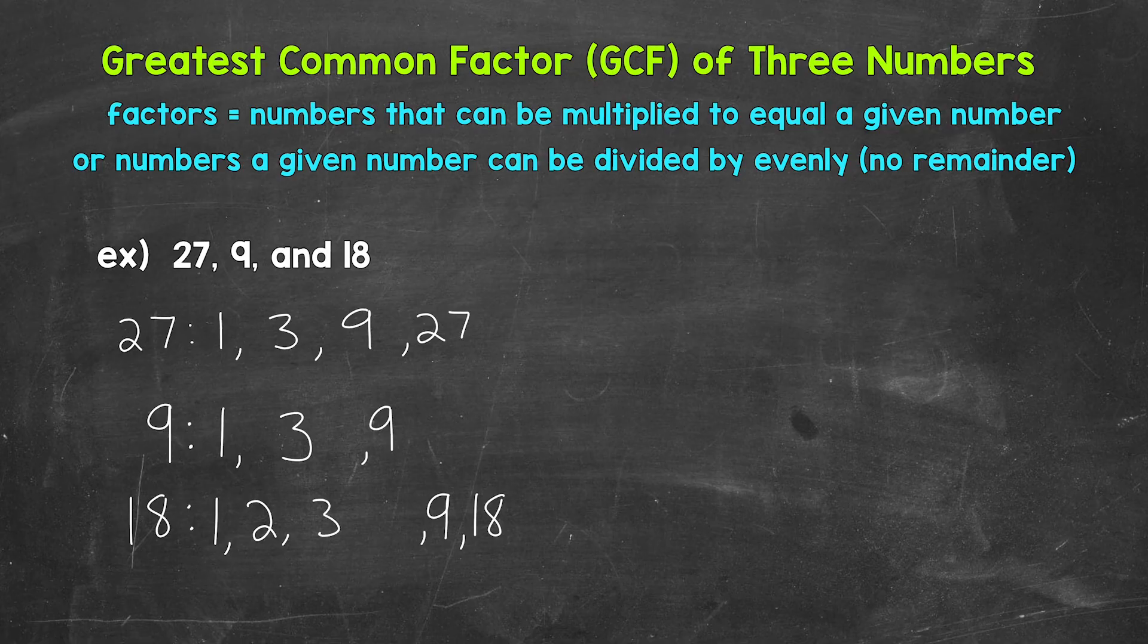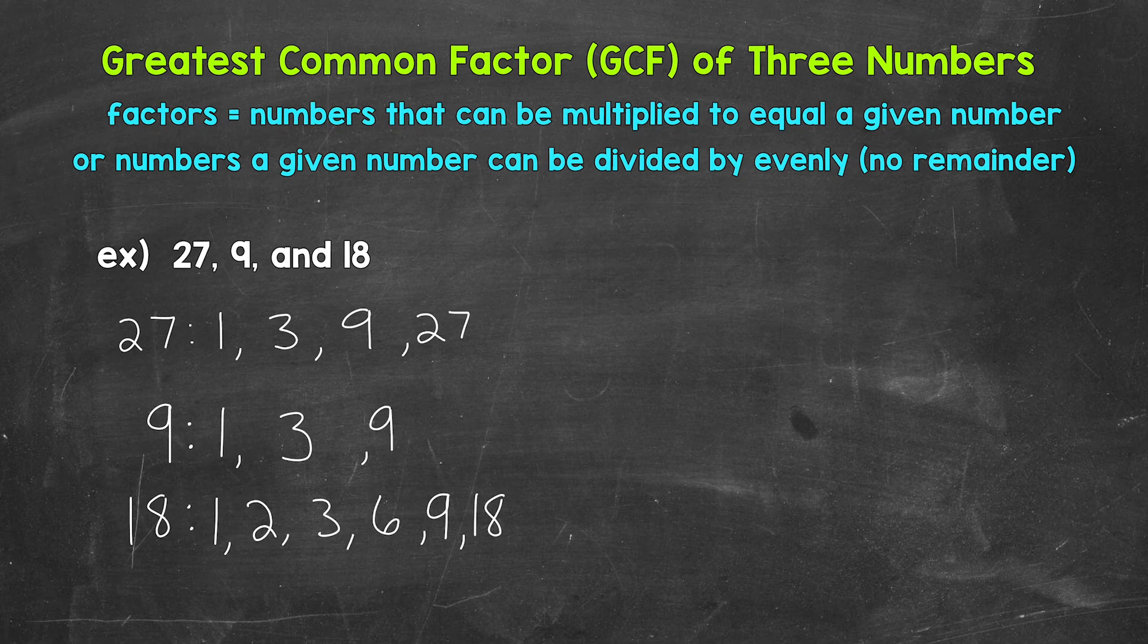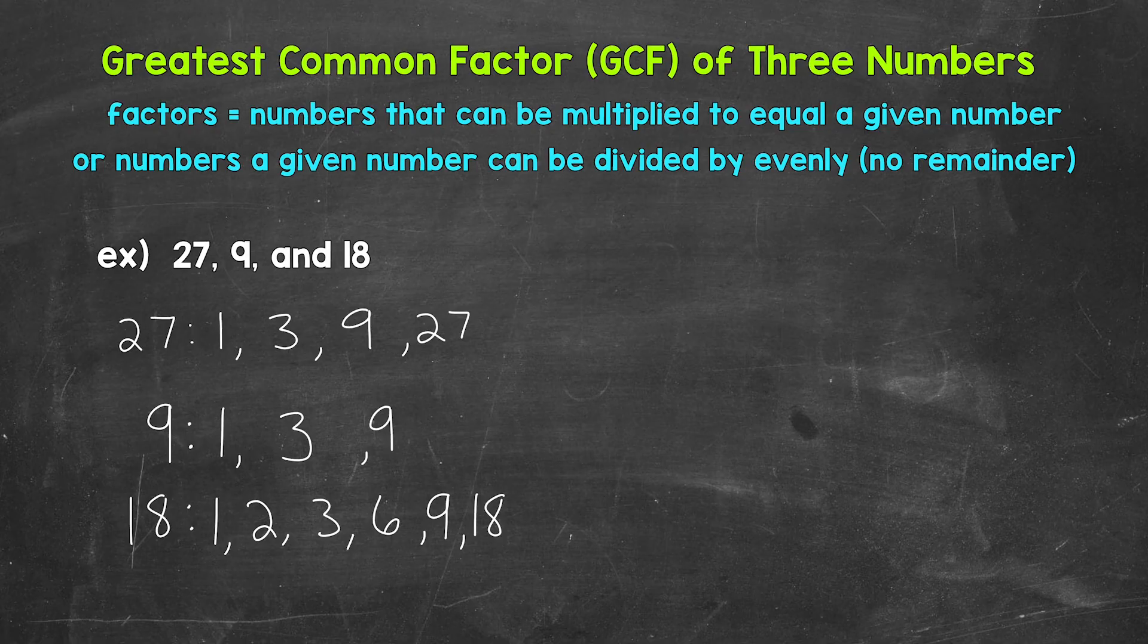And then lastly, we have 3 and 6. 3 times 6 equals 18. So 3 and 6 are factors of 18. And that's it for the factors of 18. 1, 2, 3, 6, 9, and 18. Now that we have all of the factors listed for our numbers, we need to look for common factors.